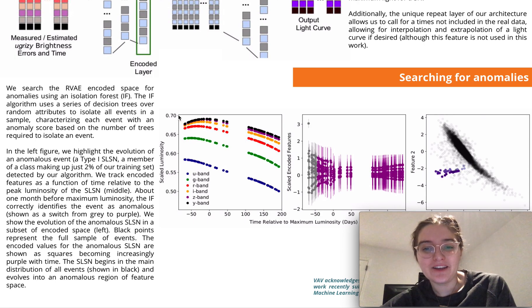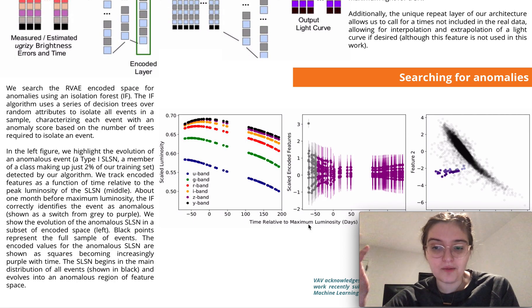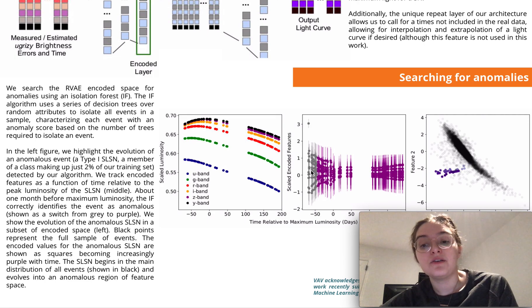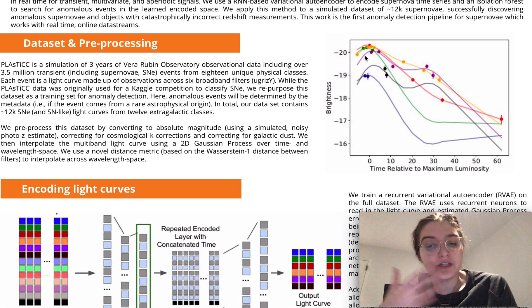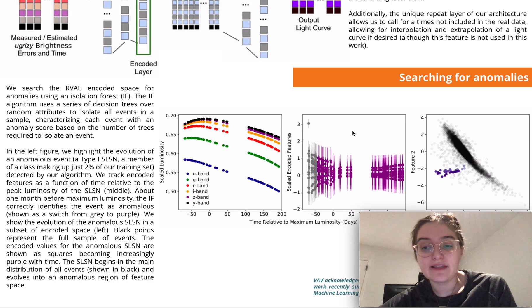The pipeline agrees, it also finds it to be anomalous. Here I'm showing you how the features change as a function of time where the color indicates when the anomaly score reached a certain threshold to be considered an anomalous event. What's exciting is that that happened very early on, in particular before the light curve reaches its maximum light which is important scientifically for us as that's the optimal time to trigger additional follow-up.